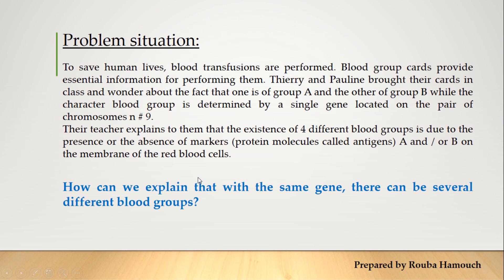As you know, one gene codes for one protein, and the expression of this protein leads to the phenotype — to the appearance of our characters. So how can we obtain from one gene several phenotypes?